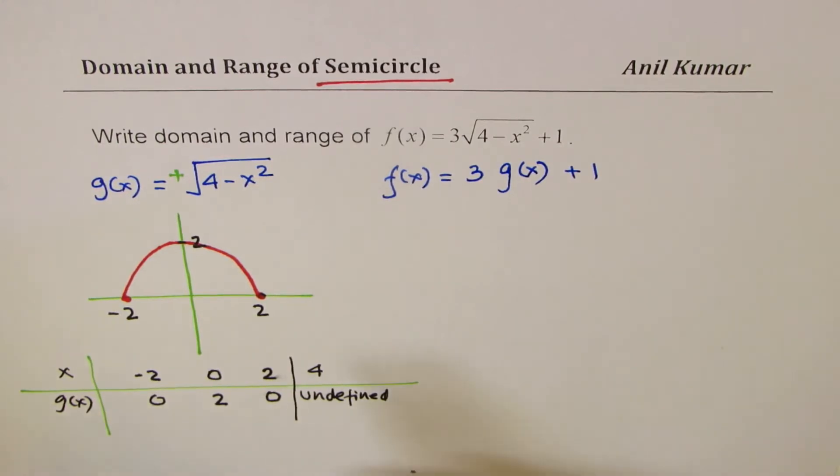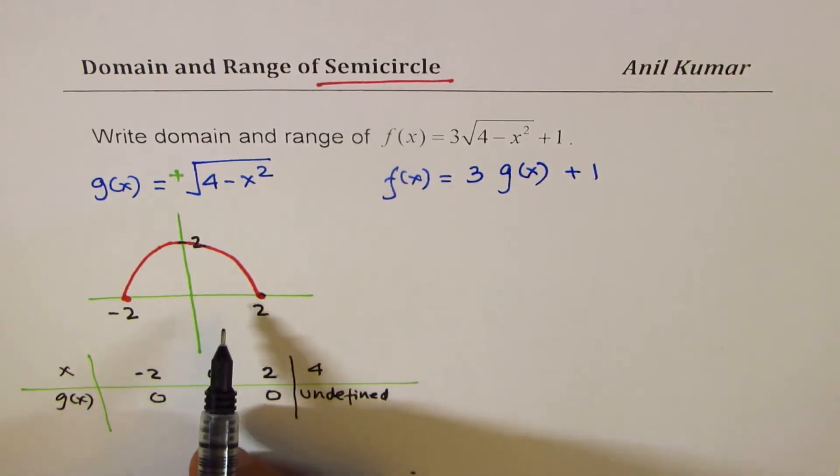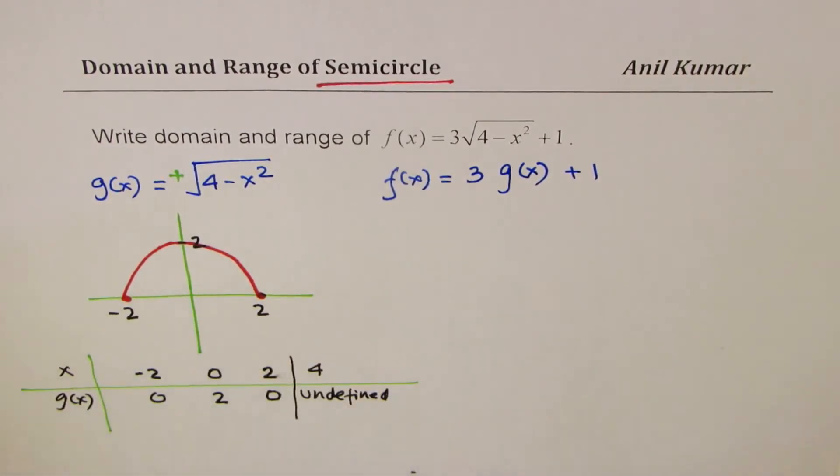Now in this case, radius is 2 units. Now, what is the domain here? And what is the range?